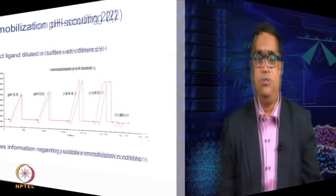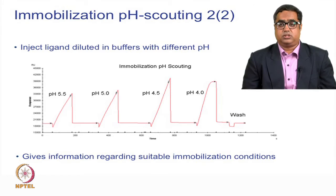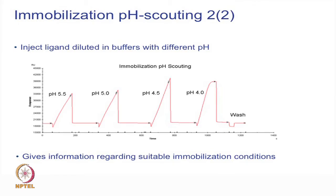If we are not aware of a molecule's PI because it is newly recombinantly expressed, we go for immobilization pH scouting: dissolving the protein at different pH values, passing it over the chip surface, and observing the responses. Wherever the molecular pH is good for immobilization, we proceed at that range. Most proteins are generally immobilized at 10 mM sodium acetate buffer pH 4.5, but this is a general assumption.